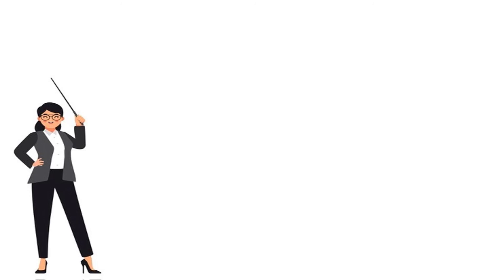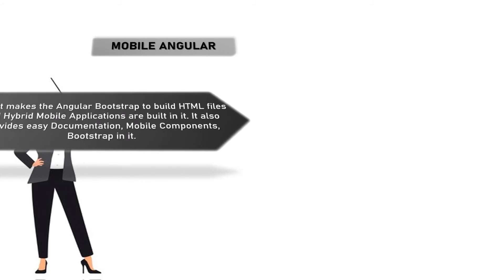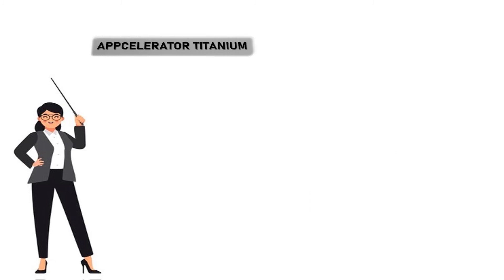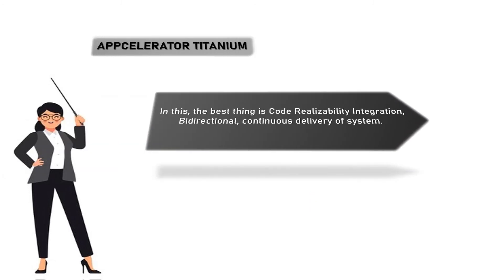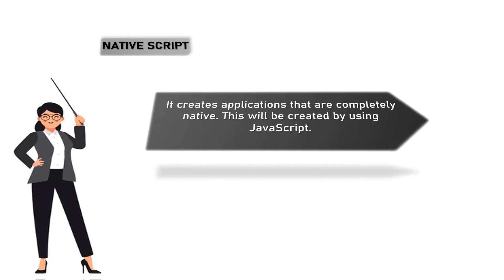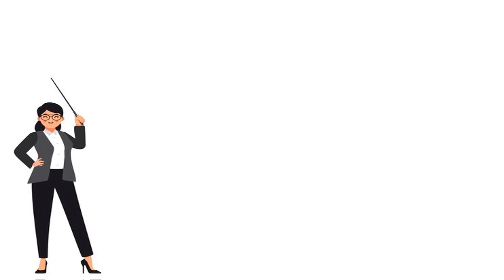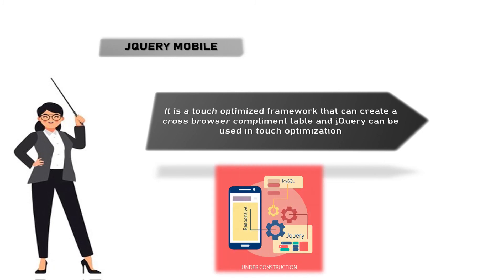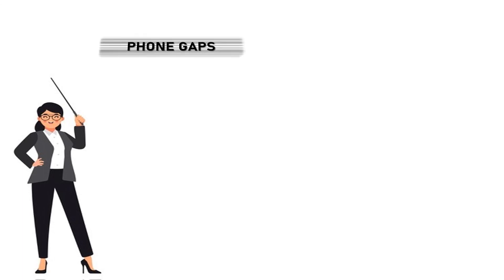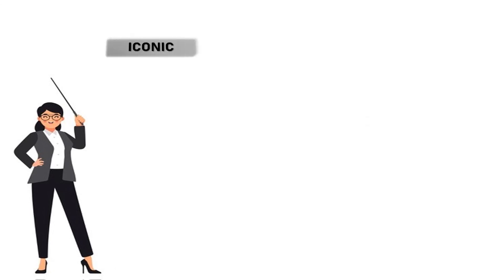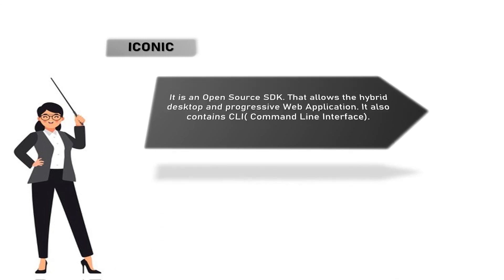1. Mobile Angular — it makes Angular bootstrap to build HTML files and hybrid mobile applications. It also provides easy documentation, mobile components, and bootstrap. 2. Accelerator Titanium — the best features are code reusability, integration, bi-directional and continuous delivery of system. 3. Native Script — it creates completely native applications using JavaScript. 4. jQuery Mobile — it is a touch-optimized framework that creates cross-browser compatible applications; jQuery can be used in touch optimization. 5. Phone Gap — it allows building mobile applications using HTML, CSS, and JavaScript. 6. Ionic — it is an open-source SDK that allows hybrid desktop and progressive web application development.